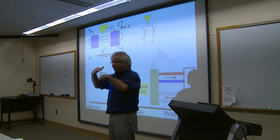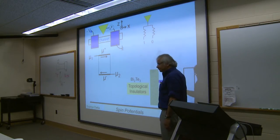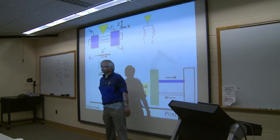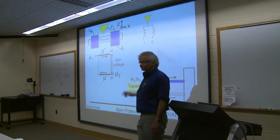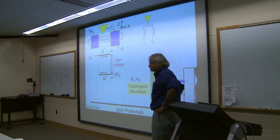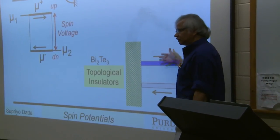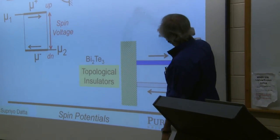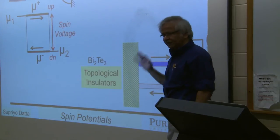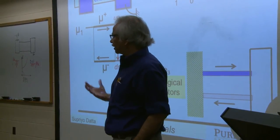In a topological insulator, mu-plus can be called the potential of the upspins and mu-minus the potential of the downspins — this difference is the spin voltage or spin potential. Experimental confirmation came around 2008 via photoemission experiments showing that electrons emitted in opposite directions had opposite spins. People have since been developing electrical experiments to measure this spin voltage directly.